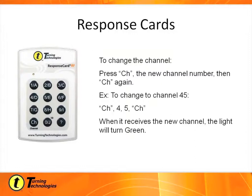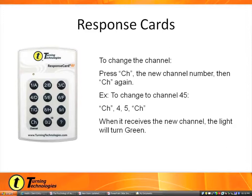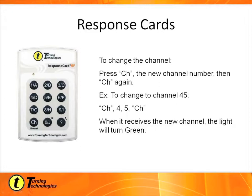To change the channel on the RF response cards, it's a three-step process: click the CH button in the lower left-hand corner, type out the new channel number, then click CH again. On the standard RF response card, a light in the upper left-hand corner turns green momentarily to confirm the channel change was successful. The RF LCD card also gives visual confirmation on the LCD screen showing which channel you're currently set to. The cards default to channel 41.